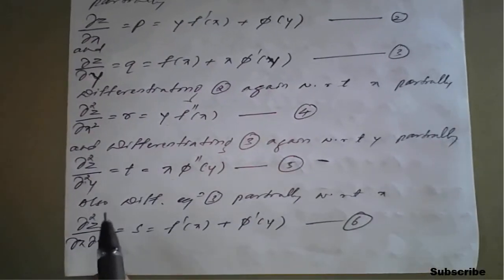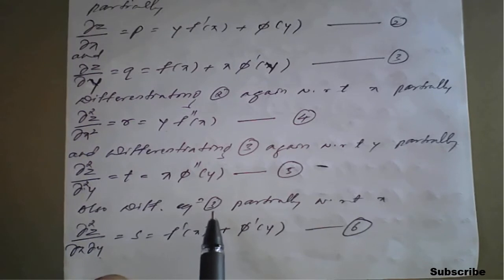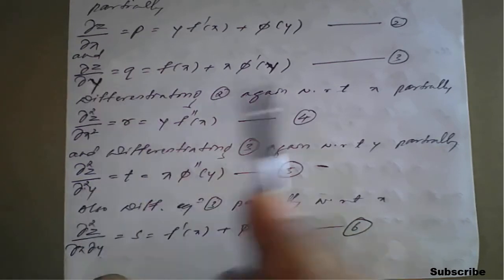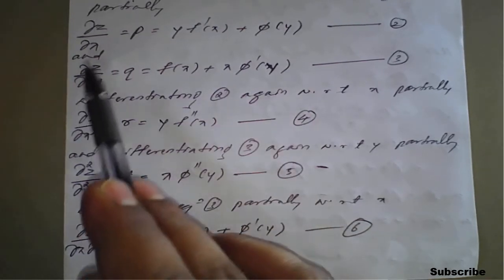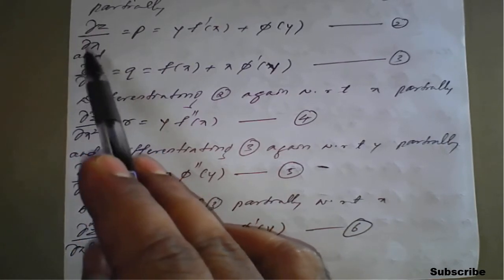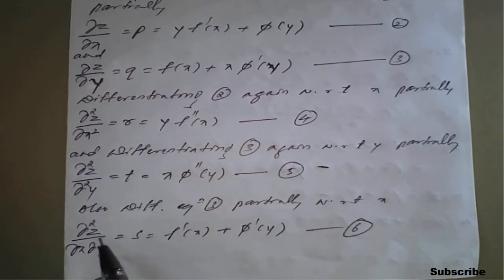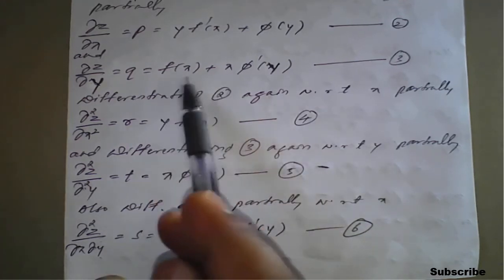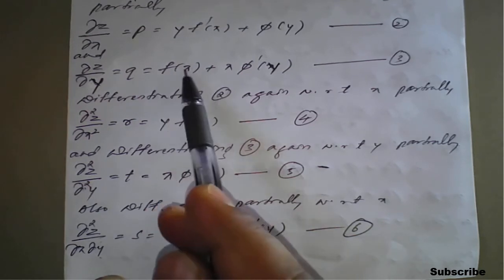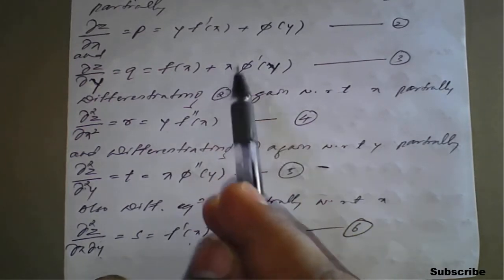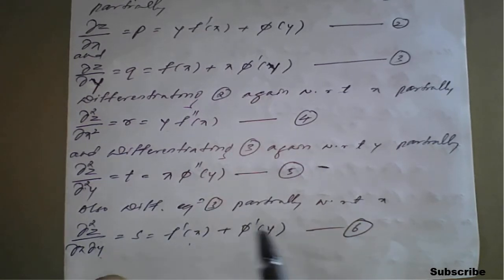We also need to differentiate equation 3 with respect to x, or equivalently differentiate equation 2 with respect to y. Taking equation 3 and differentiating with respect to x partially, we get dou square z upon dou x dou y, symbolically called s. It becomes f dash of x plus phi dash of y, where the partial derivative of x with respect to x is 1. This gives equation number 6.